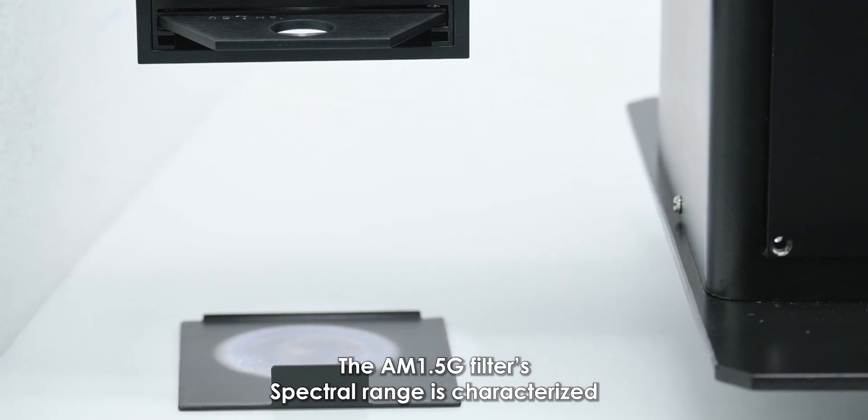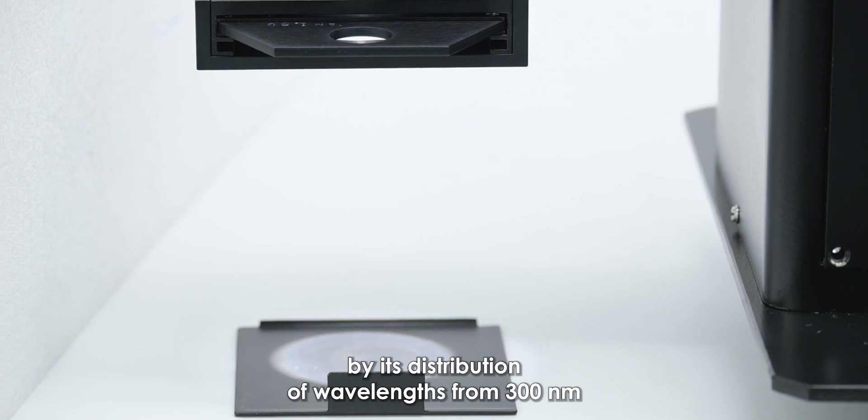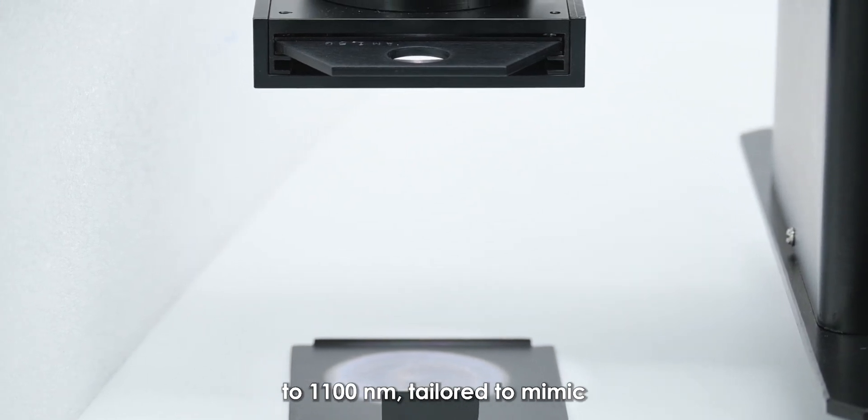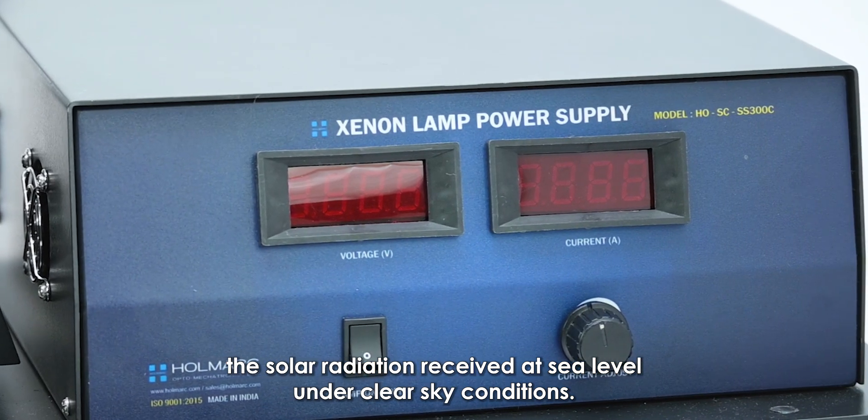The AM1.5G filter's spectral range is characterized by its distribution of wavelengths from 300 nm to 1100 nm, tailored to mimic the solar radiation received at sea level under clear sky conditions.